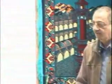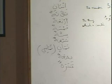Ready? Wahid. Ithnani. Salasa. Arba. Khamsa. Sitta. Sabaa. Thamani. Tissa. Asara. Probably in Somali you have the same numbers — they are different. Wahid. Ithnani. Salasa. Arba. Khamsa. Sitta. Sabaa. Thamani. Tissa. Asara.